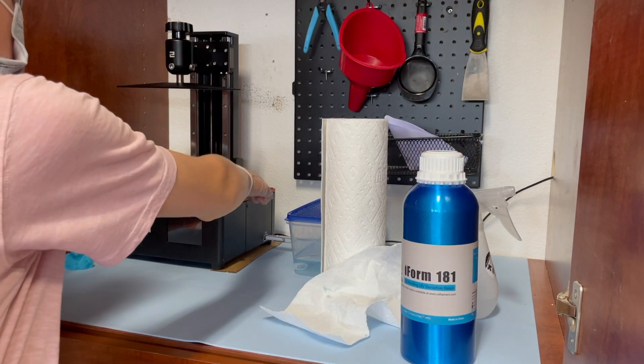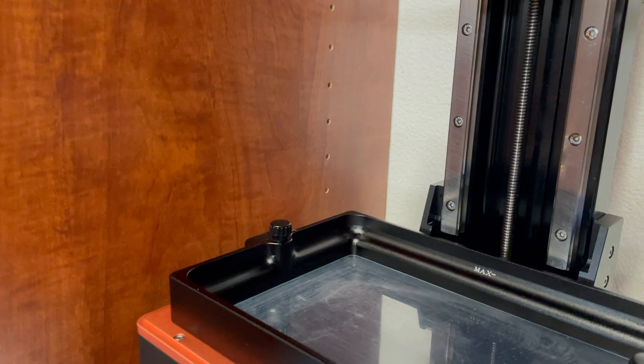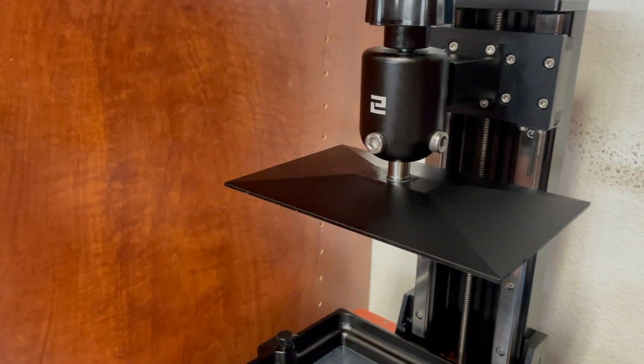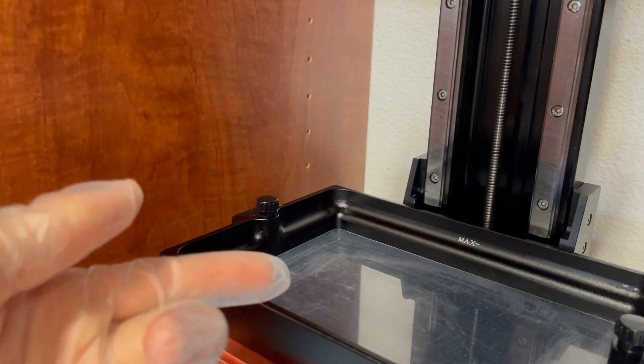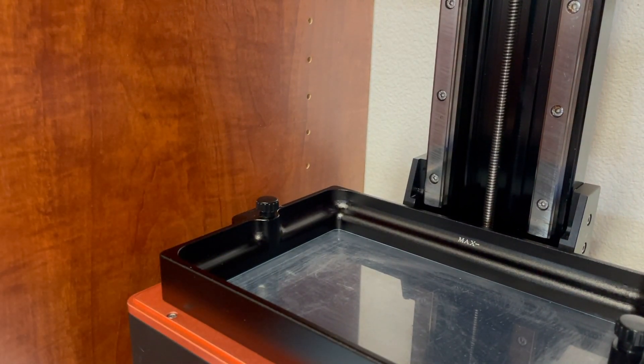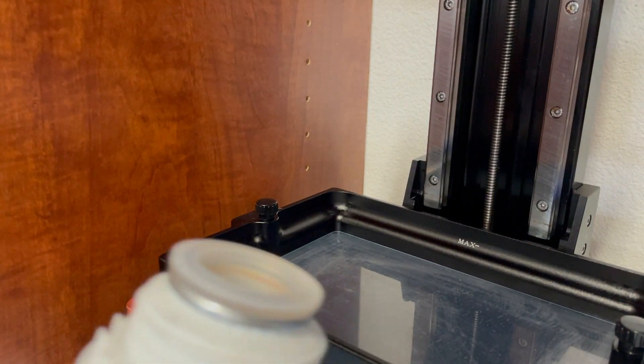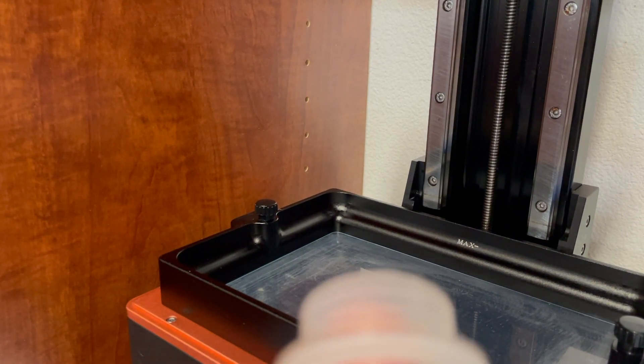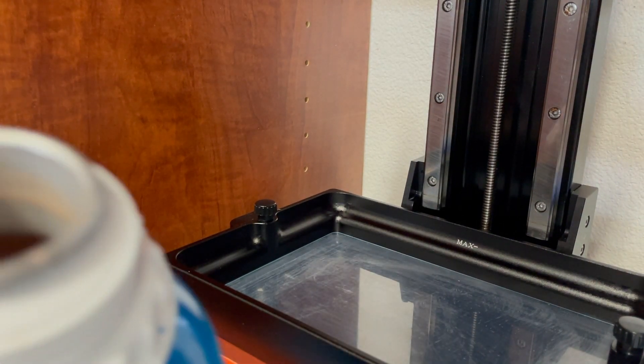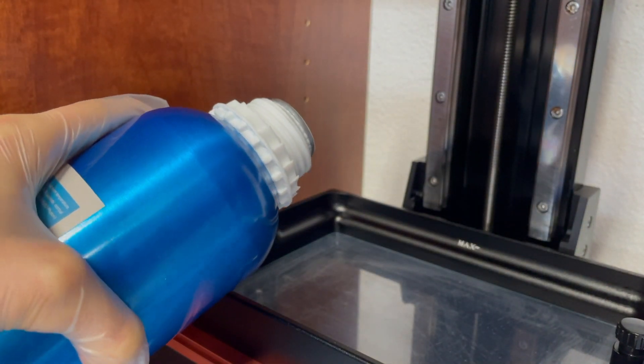And you put the vat onto the resin and onto the 3D printer. Screw that down. Alright guys, so once you have this all cleaned off and you have your vat cleaned off, you grab your bottle of resin. And then see this tab? Just pop that off. And you have your resin bottle. I would also shake this. And then just pour it in.